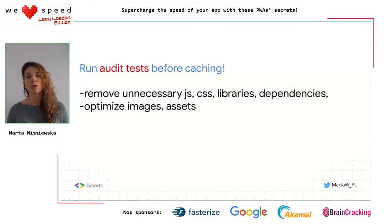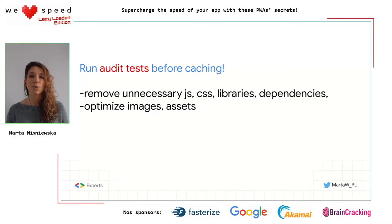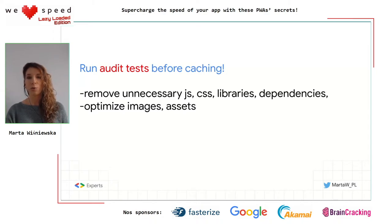App speed is more a factor of rendering time after all your responses are collected. Please remember to run audits before caching. Because if your app is heavy, has a lot of JavaScript, big assets, and so on, then service worker won't help you. You should remove unnecessary JavaScript, CSS, libraries, and dependencies, and also optimize your assets and images. That will help you get faster apps.